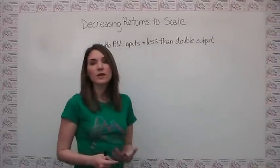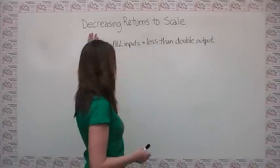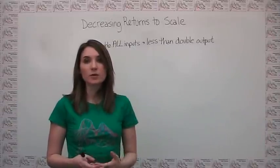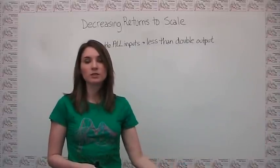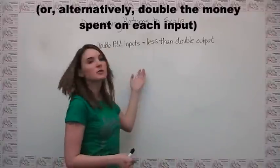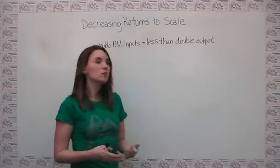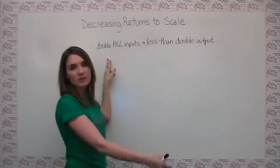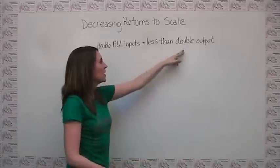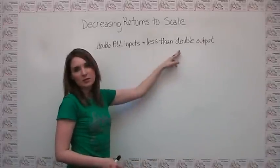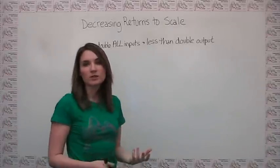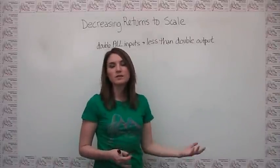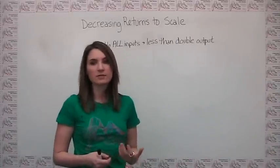Again, another way to think about decreasing returns to scale is to ask yourself what happens when I double all of my inputs in production. In this case, if we see decreasing returns to scale, we'll notice that when we double all of our inputs, namely we put twice as much stuff into the production process, we actually get less than twice as much stuff out of the production process. So we're being less efficient in turning inputs into outputs when we have decreasing returns to scale.